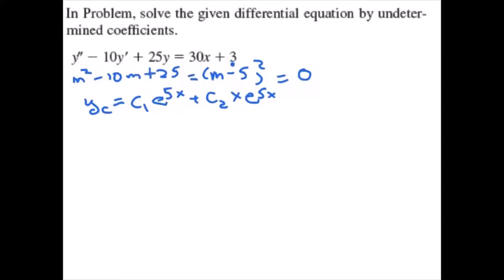So what's left is 30x plus 3. Let's assume that y of p takes the form of ax plus b. yp prime is a, yp double prime is 0.